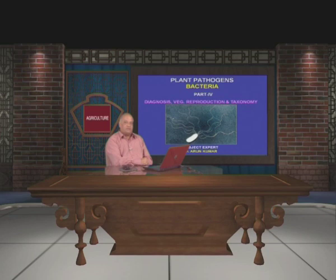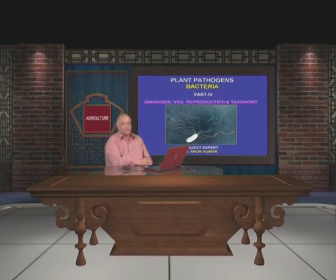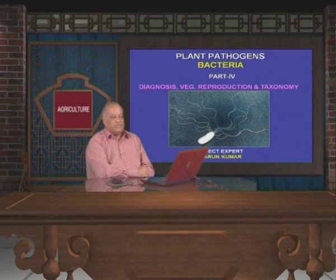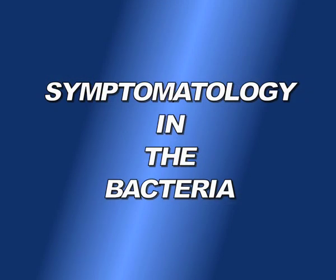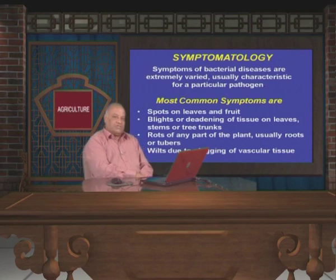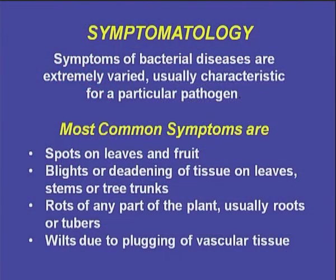Hello viewers, welcome to the course of introductory plant pathology. Today we will be discussing about the plant pathogen bacteria, covering diagnosis, vegetative reproduction, and taxonomy. First, we will discuss symptomatology in bacteria — what type of symptoms we usually see in bacteria-affected plants, especially our crop plants. Symptoms of bacterial disease are extremely varied and usually characteristic of the particular pathogen. Here we discuss the most common types of symptoms.